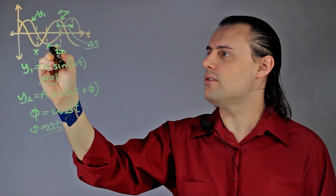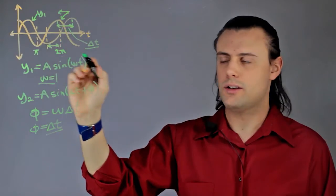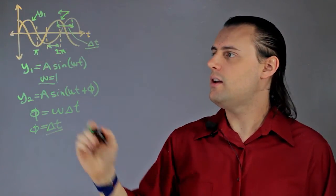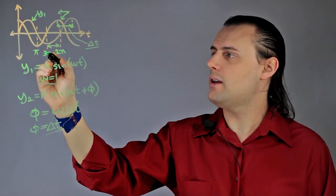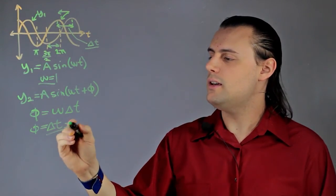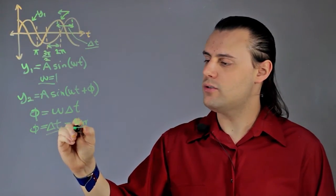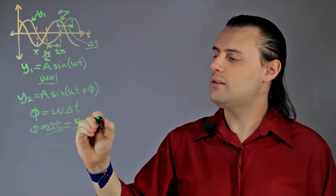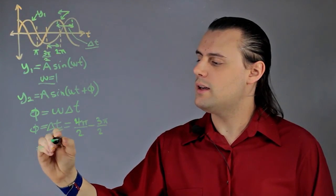So what is this difference? Well, it's equal to the difference between when the rising slopes intersect with the t-axis. So if this is 2π and this is π, right in the middle is 3π/2, so Δt is equal to 4π/2 minus 3π/2, which is equal to simply π/2.